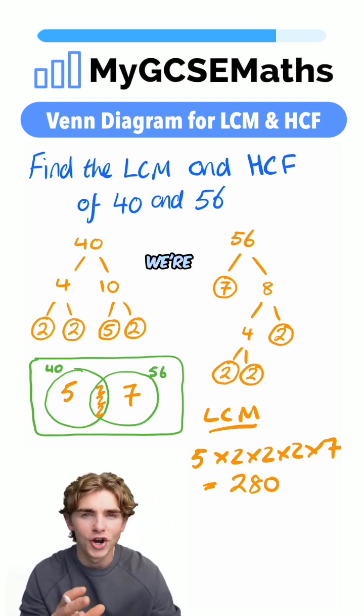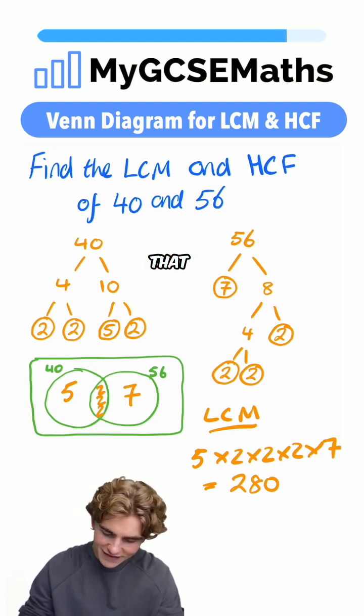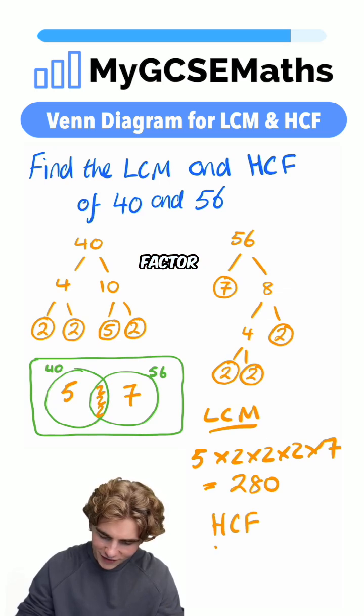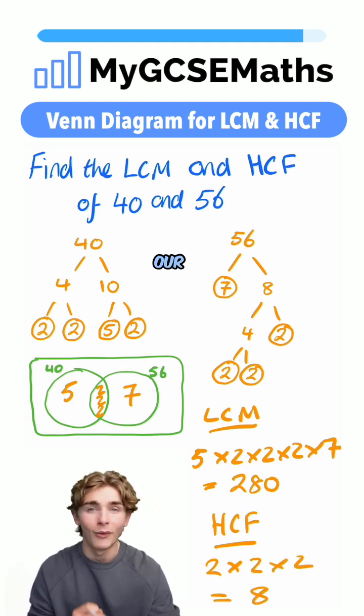And what about our highest common factor? In order to find that, we're going to multiply only the numbers which are in the middle of the Venn Diagram. So we can say that our highest common factor for 40 and 56 is going to be equal to two times by two times by two, which is going to be eight, our answer.